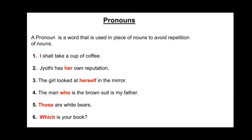In the first sentence, 'I' is a personal pronoun. In the second sentence, the word 'her' is a possessive pronoun. In the third sentence, the word 'herself' is a reflexive pronoun. In the fourth sentence — the man who is in the brown suit is my father — the word 'who' is a relative pronoun. In the fifth sentence, the word 'those' is a demonstrative pronoun. In the last sentence, the word 'which' is an interrogative pronoun.